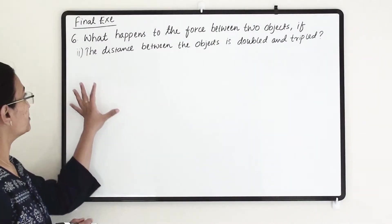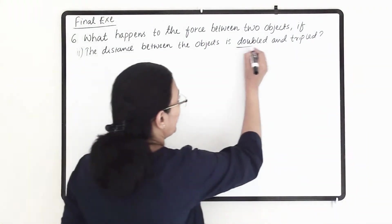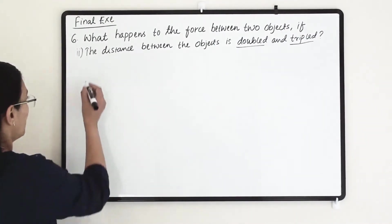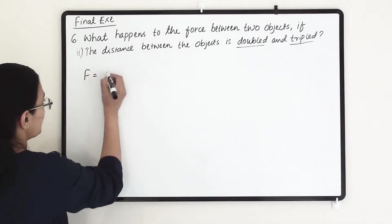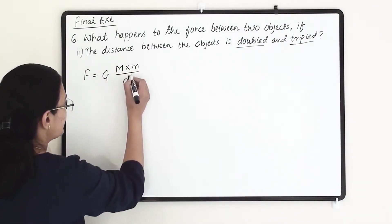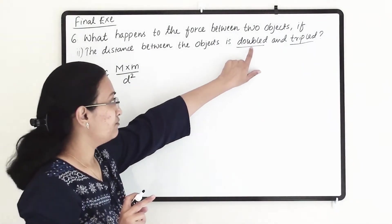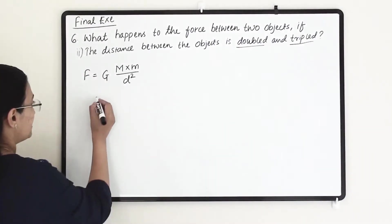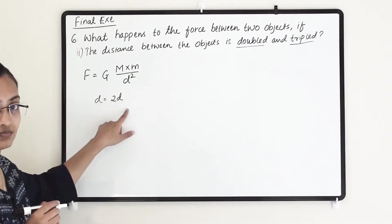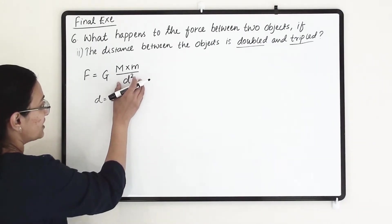The second question involves the distance between the objects being doubled and tripled. In the first case we make the distance double. Our force formula is F equals G times capital M times small m divided by d square, where d is the distance between the two objects. We now make the distance double, so we substitute 2d for d.